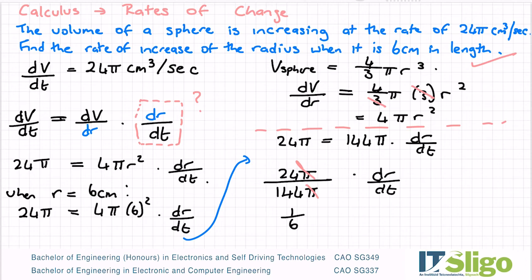Let me write down dr/dt equals first, so dr/dt equals 1/6. Now what's its units? Well, it's radius, and that's centimeters. Radius, and it's with respect to time, so it's per second. So the radius is increasing at a rate of 1/6 cm per second.